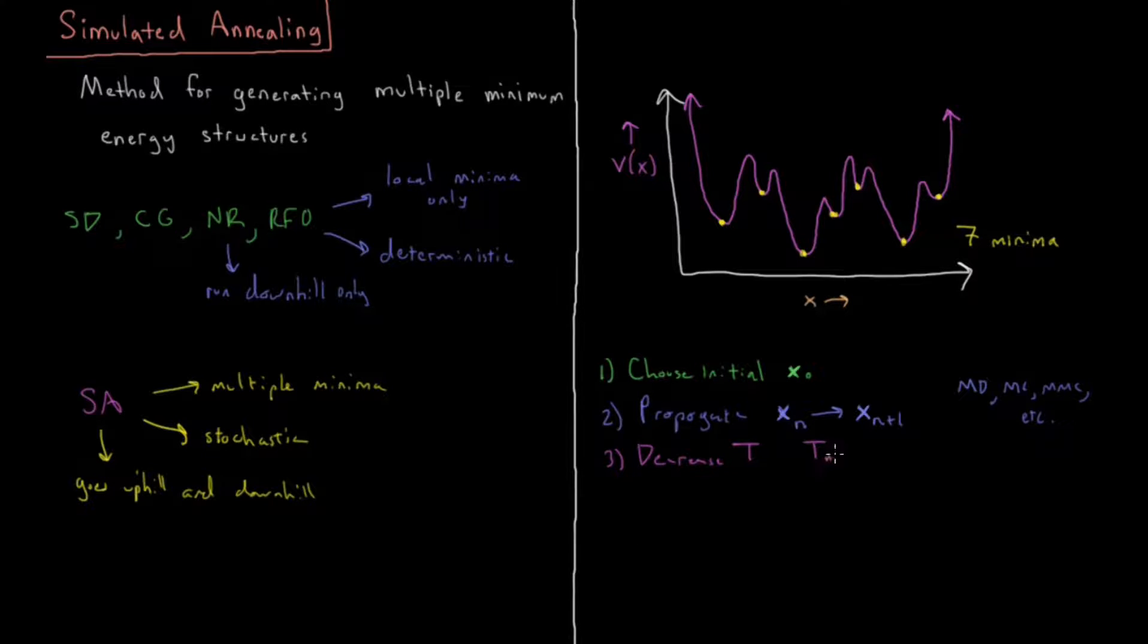So T_n+1 equals T_n times one minus alpha, where alpha is equal to T_0, the initial temperature divided by the number of steps or the number of iterations we're going to do on this loop. So basically T starts out at T_0 for our dynamics or Monte Carlo, and then it's going to start at T_0 and then just linearly slow down all the way to zero.